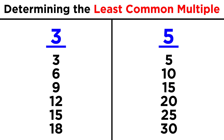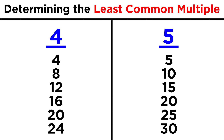Let's list the multiples of five now: five, ten, fifteen, twenty, twenty-five. What is the least common multiple of three and five? That would be fifteen. What about four and five? That would be twenty.